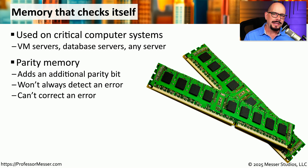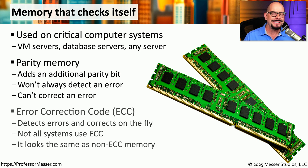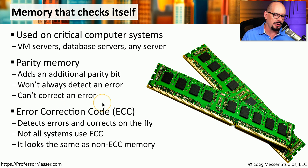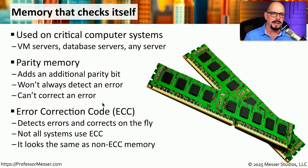If you were able to recognize an error with the memory, then it might be possible to correct that error. If you were running ECC memory, you would be able to provide that correction. ECC is error correction code. It not only determines that a memory error has occurred, it can correct that error, and the system will continue to run normally.